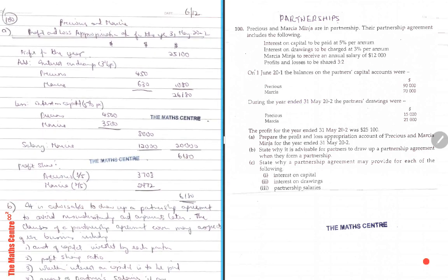You can refer to my notes at any time at the beginning of this partnership section — they will guide you how to do this. You have to write the title: the profit and loss appropriation account for the year ended 31st of May. You always start with the profit for the year, then add interest on drawings. Remember, interest on drawings is what we charge — the partnership charges the respective partners for taking drawings throughout the year, so in a way it's like an income to the partnership.